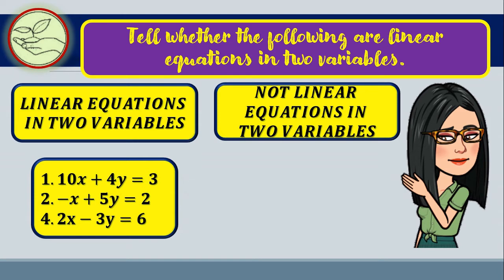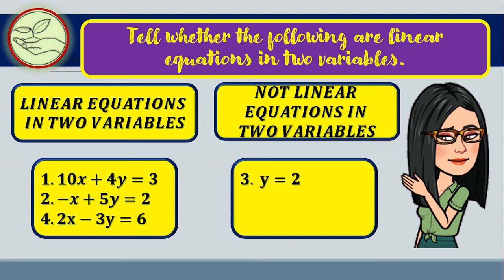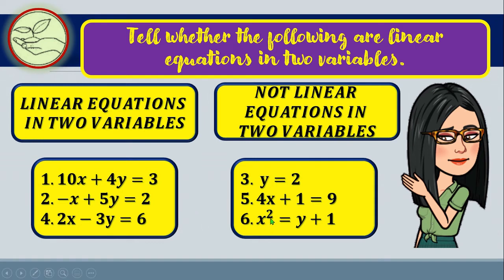Now let's check the other equations. Number 3, y equals 2, has only one variable, which is y. Number 5, 4x plus 1 equals 9, also has only one variable, which is x. And lastly, x squared equals y plus 1 is not a linear equation in two variables. Although there are two variables x and y, the highest degree is 2, which makes this a quadratic equation, not a linear equation.